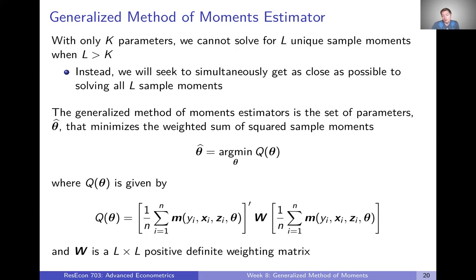But you might find, and we'll talk about reasons for this, there might be reasons why you want to weight some of your moments more highly than others in trying to minimize this objective function. And so importantly, our objective function depends on this W weighting matrix. So our GMM estimator theta hat will also depend on that weighting matrix.